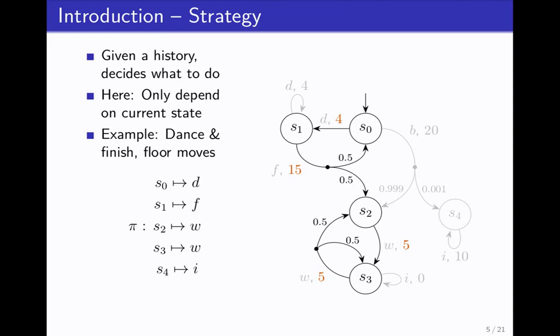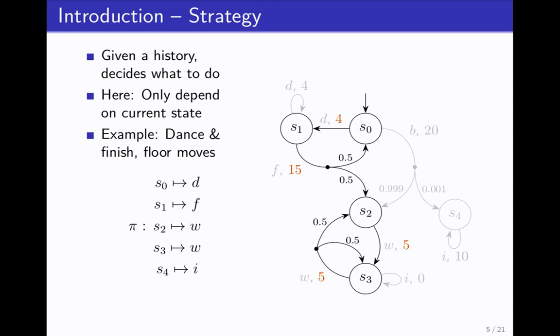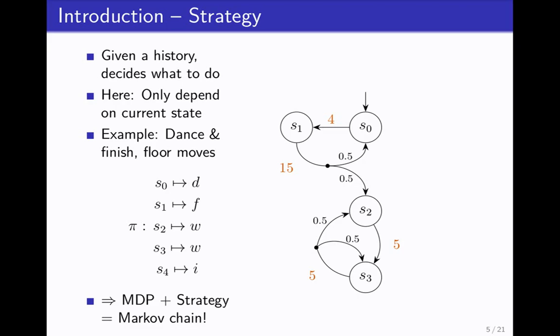Then it kind of looks like this. I've grayed out all the unimportant stuff. When we completely remove it, hey this looks kind of familiar. This is a Markov chain. If we have an MDP, add a strategy to it, we get a Markov chain. For Markov chains there also is this concept of long run average reward. It's quite literally the expected reward you get in the long run. You can think of it as average energy consumption, as some kind of performance metric, my average enjoyment while watching this robot do its particular program.